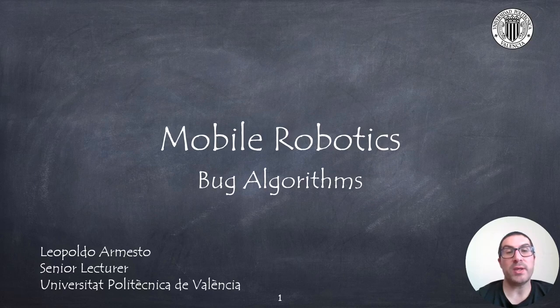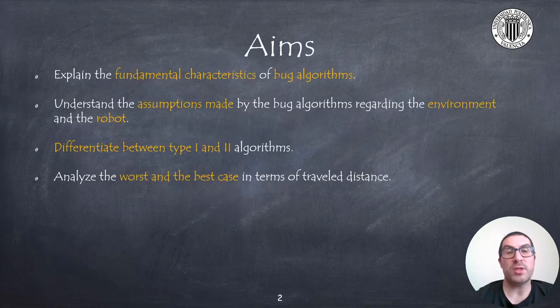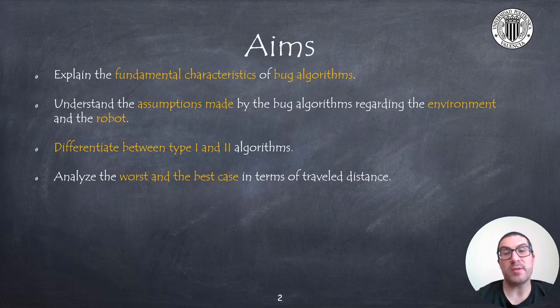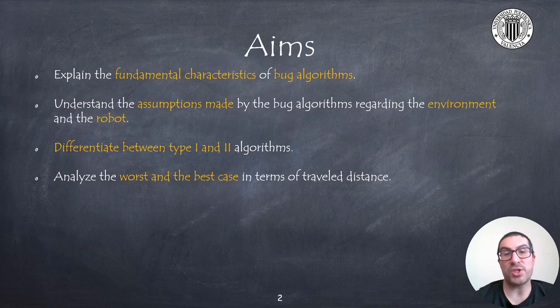That is, it tries to emulate the behavior that bugs have when moving around the environment. The aim of this presentation is to explain fundamental characteristics of bug algorithms, as well as their main assumptions regarding the knowledge about the environment and the robot.